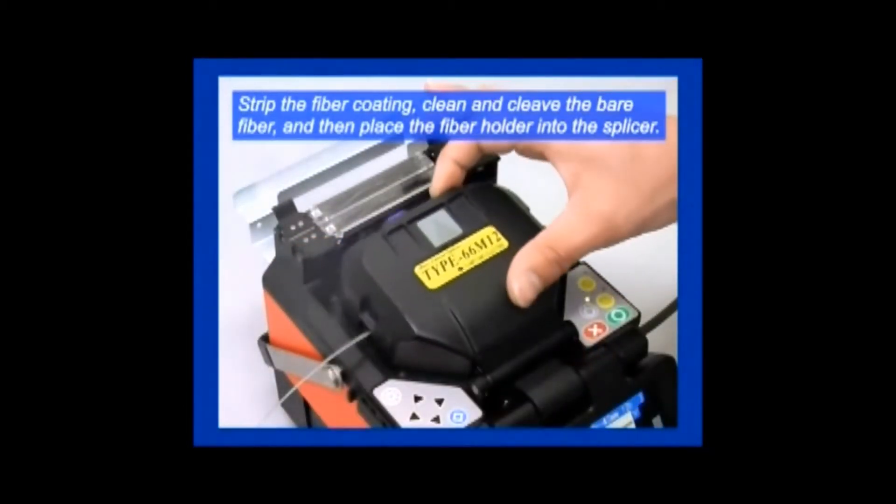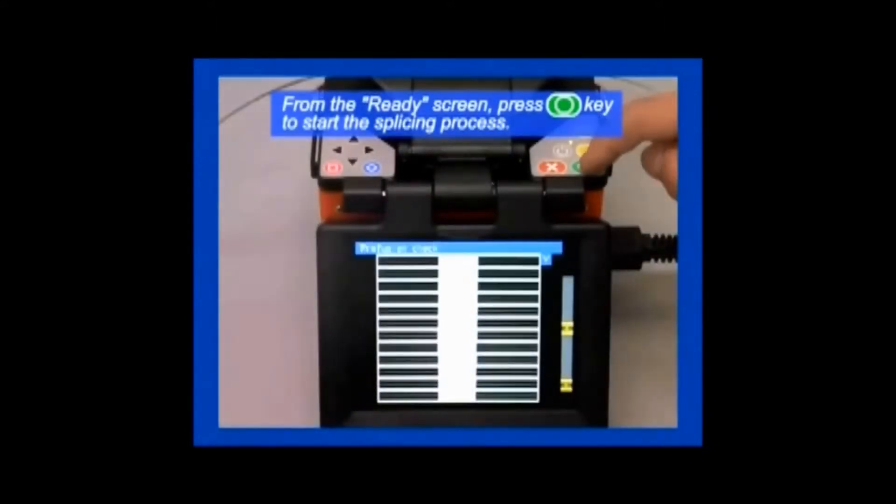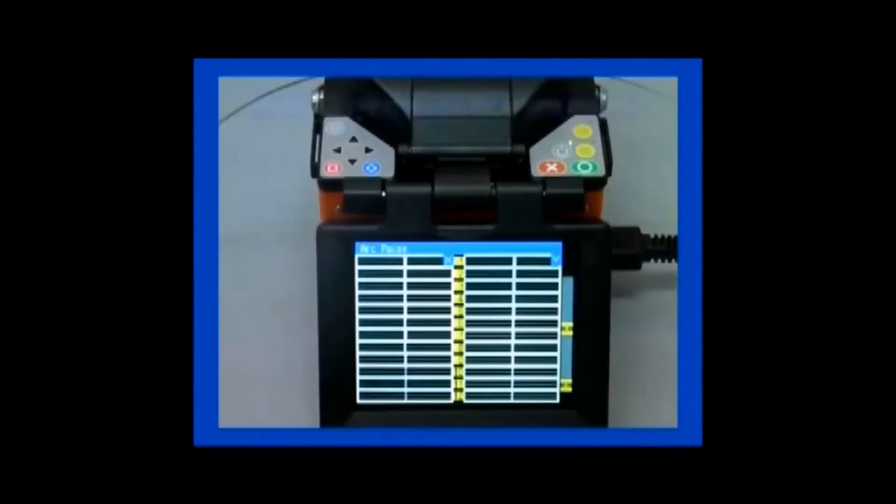The splicing machine brings the fiber ribbon ends close to each other and the technician then presses the green button again to resume the splicing process.